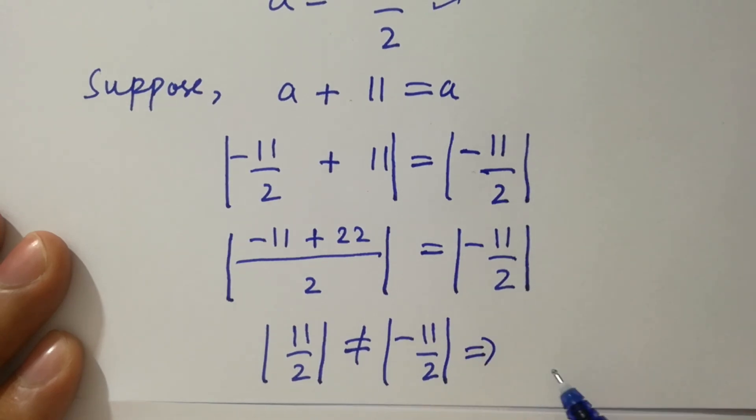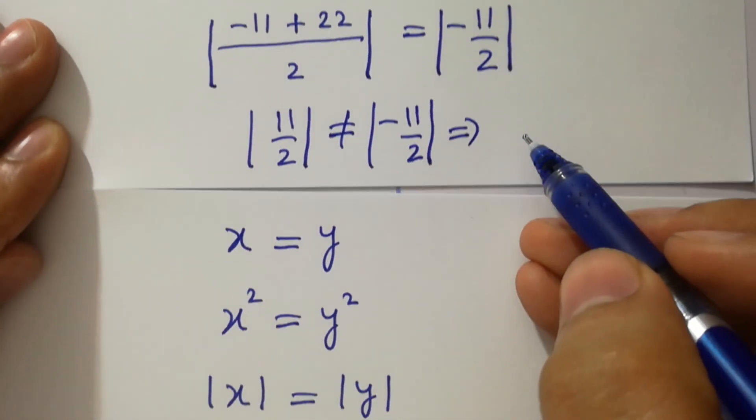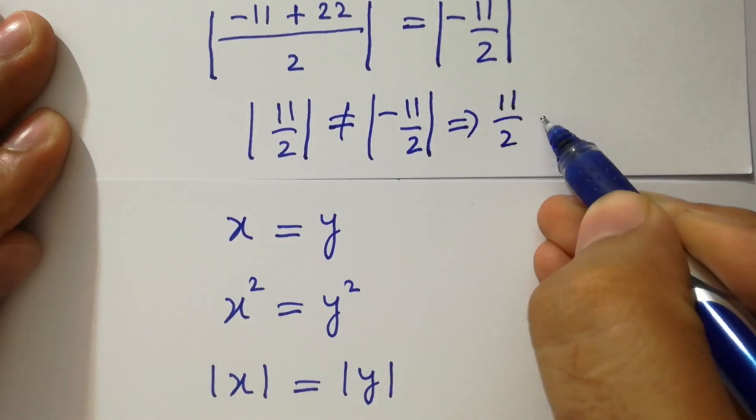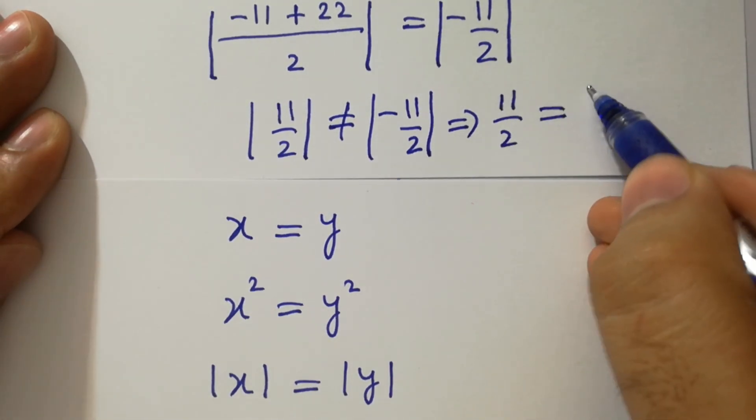By this, we get 11 over 2, which is equal to 11 over 2.